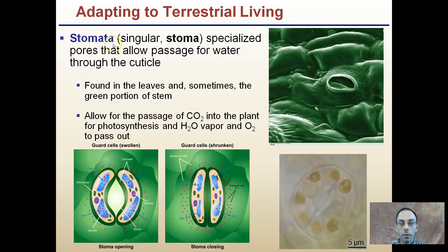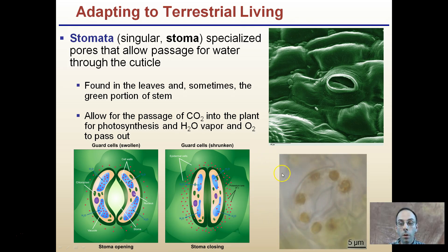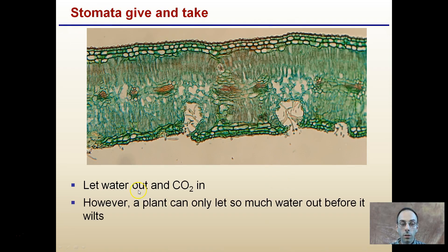One area where water can leave the plant is through the stomata — specialized pores that allow passage of water through the cuticle. These pores are found in leaves and sometimes portions of the stem, and the plant can regulate whether they are open or closed. They allow carbon dioxide to enter the plant for photosynthesis, while water vapor and oxygen can pass out. When open, water can leave but necessary CO₂ enters. However, the plant can only keep them open so long before it wilts and may die — stomata are a give-and-take process. A cross-sectional microscopic view of a leaf shows the very thick cuticle on top and bottom, with water loss only occurring through the stomata.